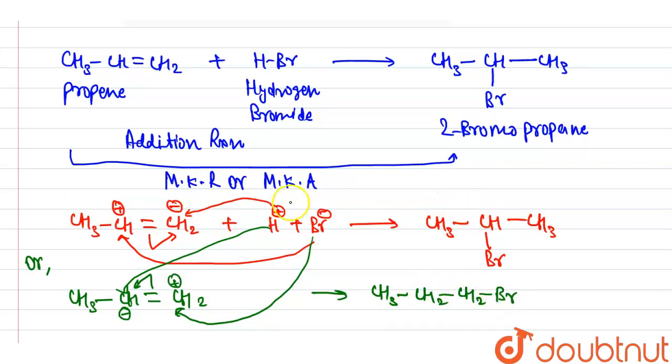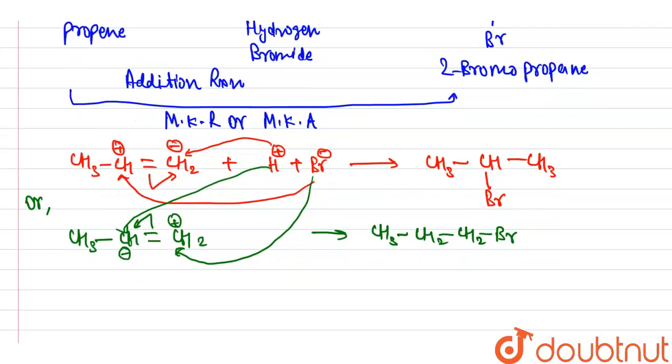Here clearly shown, in above molecule formation of 2 degree carbocation, and below the molecule formation of 1 degree carbocation. And we know the stability order of carbocation is 3 degree, 2 degree, 1 degree. So 2 degree is more stable than 1 degree. So our major product is CH3CHBrCH3.